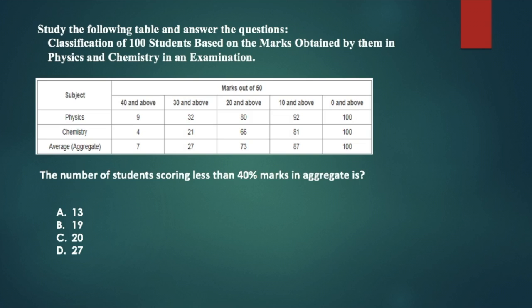Next question. The number of students scoring less than 40% marks in aggregate. 40% of 50 is 20.